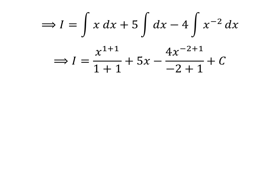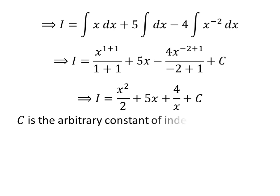Capital C is the arbitrary constant of indefinite integral — never forget to add this constant. Further simplification gives us I is equal to square of x upon 2 plus 5 times x plus 4 upon x plus capital C.